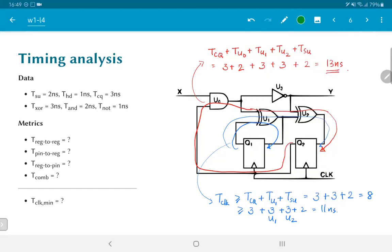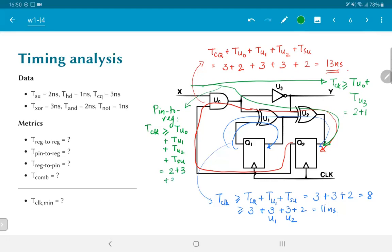Similarly, we might also have to consider paths like this, which is the pin-to-pin direct delay, where we essentially have Tclock must be greater than or equal to Tu0 plus Tu3, which is basically equal to 2 plus 1. Or, we might have something which basically says that this is a so-called pin-to-register delay, which would say that Tclock is greater than or equal to Tu0 plus Tu1 plus Tu2 plus Tsetup, which is basically equal to 2 plus 3 plus 3 plus 2 or 10 nanoseconds.